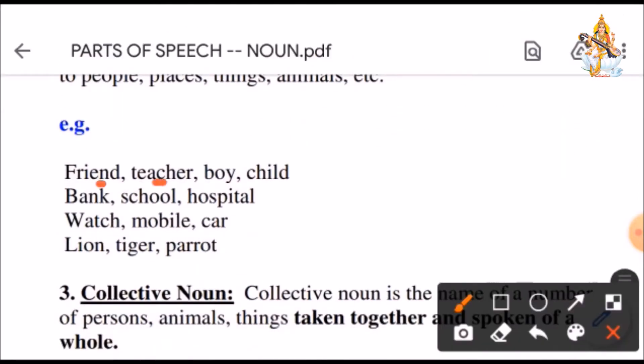See the example. Friend, teacher, boy, child. We have not named the friend. We have just said friend. We have not given any name to teacher. We have just said teacher. And even boy and child has not been given the name.